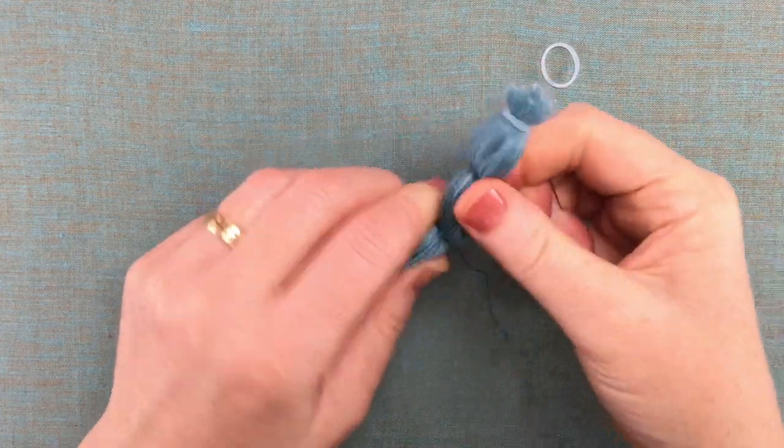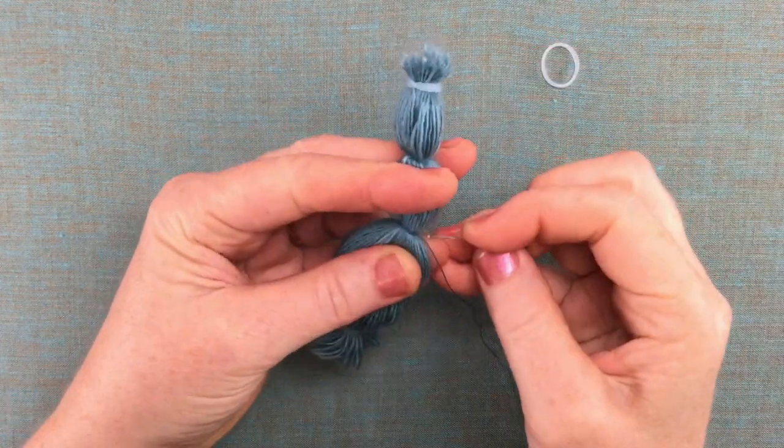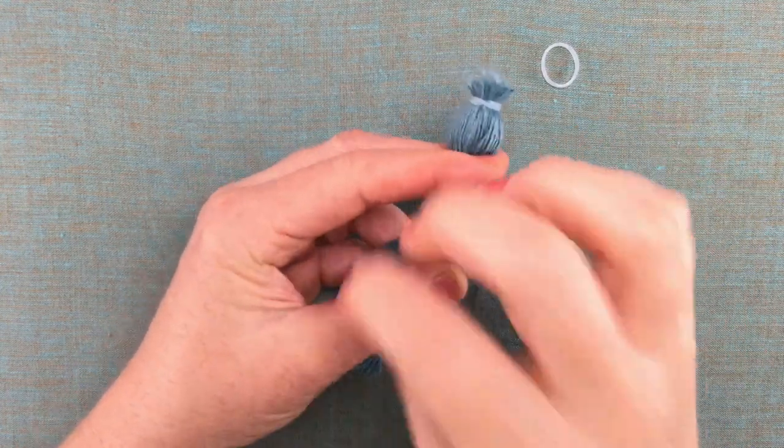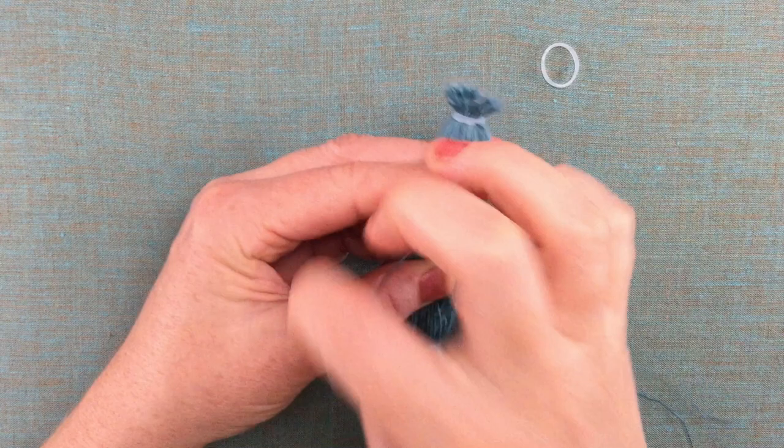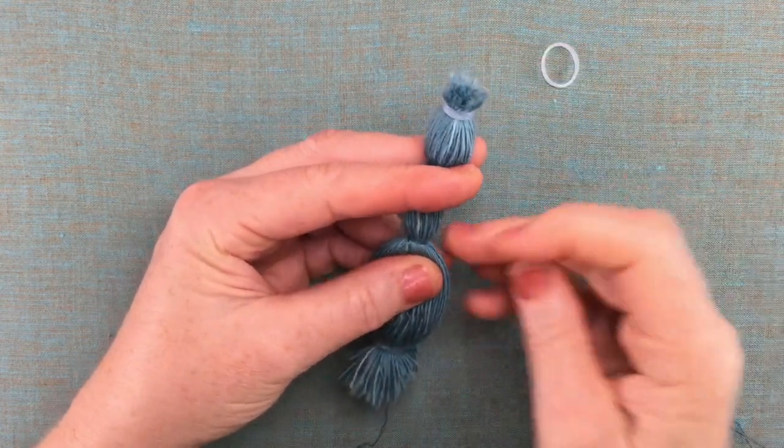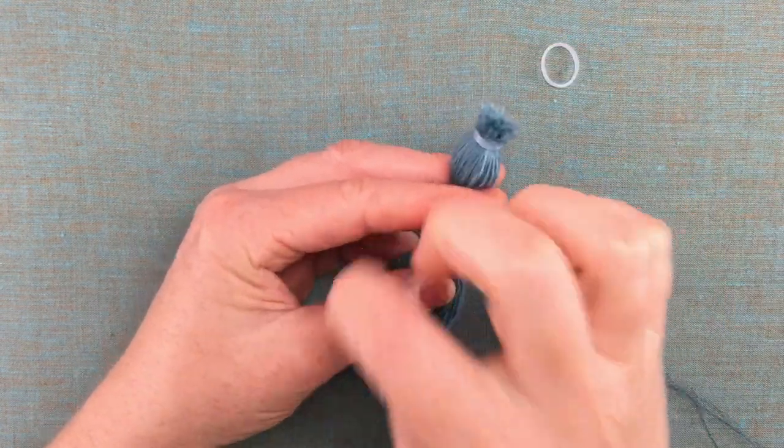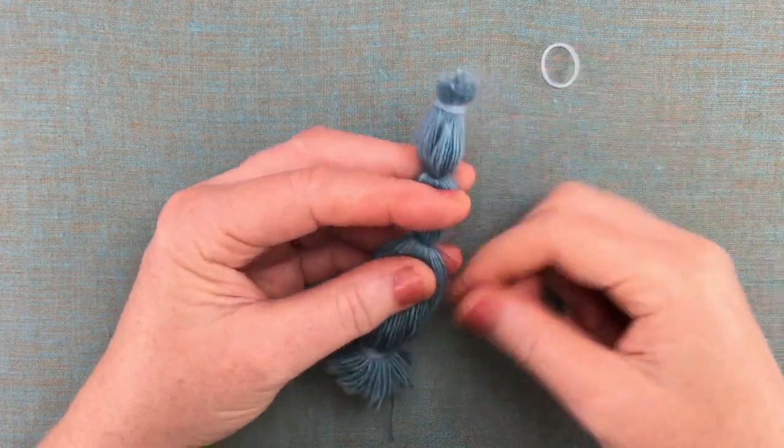So now we're going to start to stitch through the binding that we've made and what this does is it catches the fibers of the threads that are going through the pom-pom and it makes it so that they won't pull out.